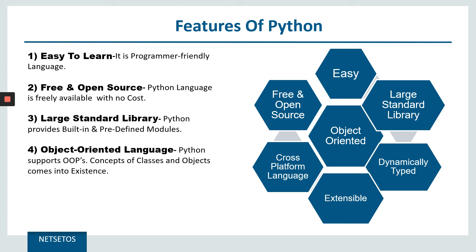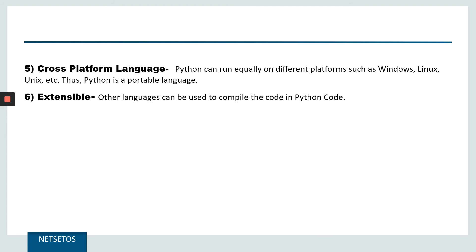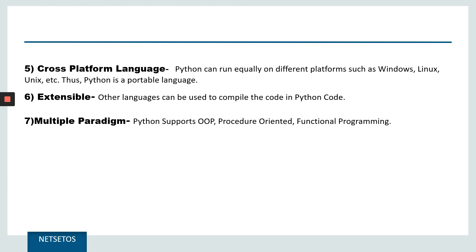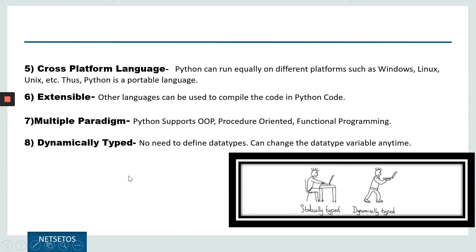Python is an object-oriented language, supporting OOP concepts of classes and objects. It is also a cross-platform language — Python can run equally on different platforms such as Windows, Linux, Unix, and more, making it a portable language. It is extensible, meaning code from other languages can be compiled within Python. Python follows multiple paradigms, supporting OOP, procedure-oriented, and functional programming. Finally, it is dynamically typed — no need to define data types, and you can change a variable's data type at any time.